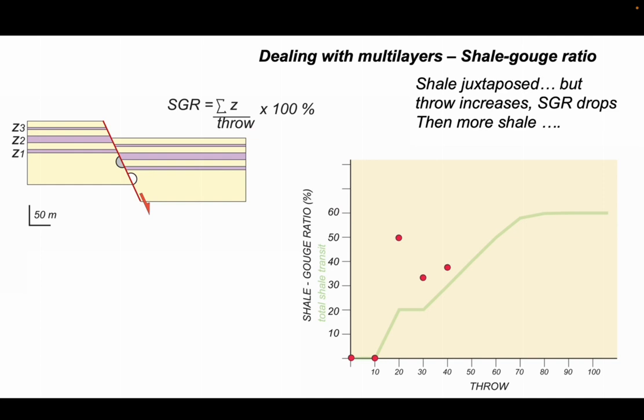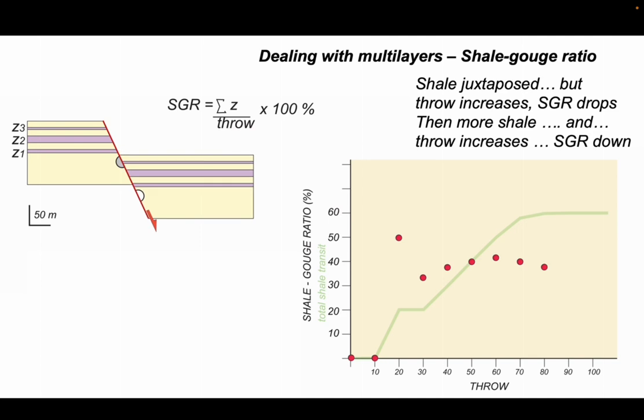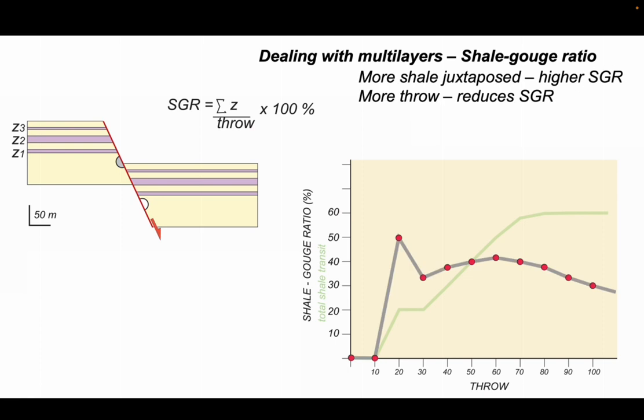But then as the next shale arrives it begins to climb again. Remember the throw is still going up so the shale gouge ratio is not increasing that quickly. Indeed the throw is out-competing the shale thickness as it arrives. So this is our history of shale gouge ratio and it shows how sensitive it is to the throw. The more shale that arrives, the higher the SGR, but the more throw there is, this reduces the SGR because the shale is more likely to be breached and attenuated out.